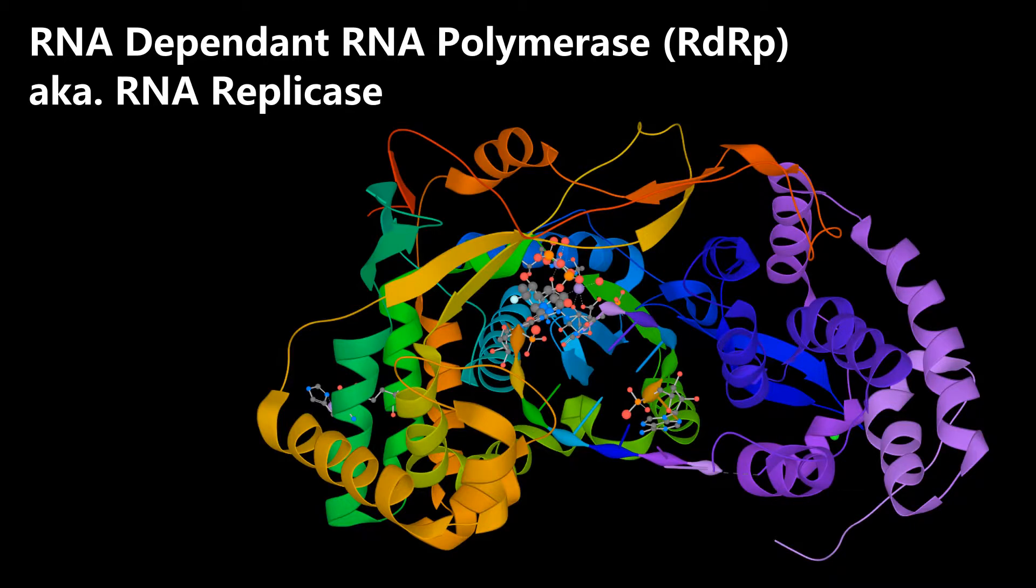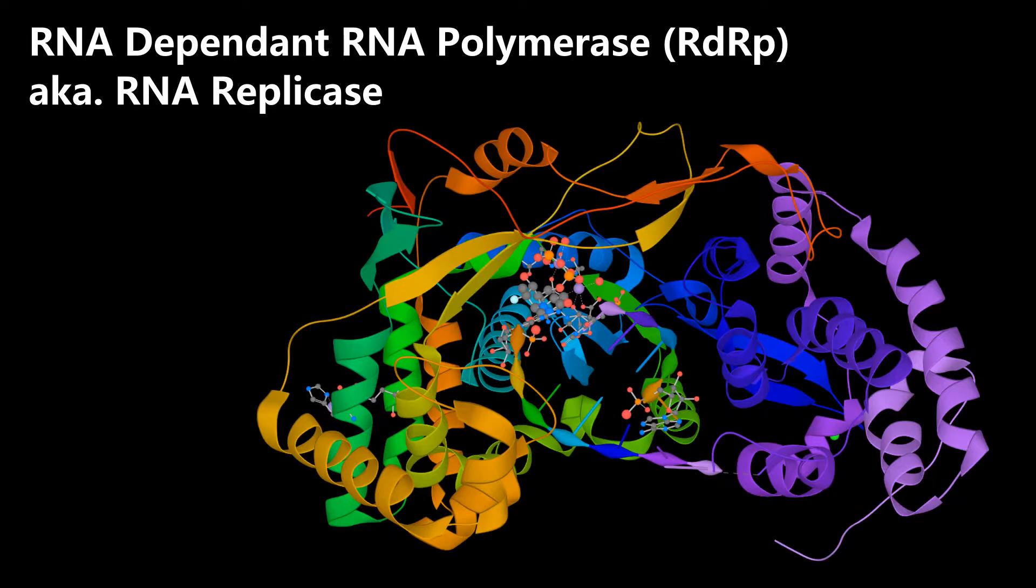But bad news, this enzyme, which is called RNA dependent RNA polymerase, is essentially a protein enzyme. And since this is the RNA world hypothesis, we cannot or we should not invoke a protein enzyme. But this is a paradox. It will destroy the whole thing. So let's just go with the flow.